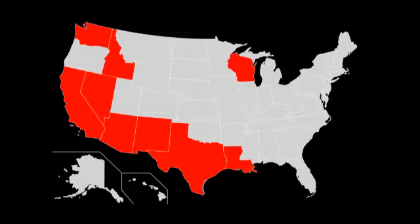Division of community property may take place by item, by splitting all items, or by values. In some jurisdictions such as California, a 50/50 division of community property is strictly mandated by statute, so the focus shifts to whether particular items are to be classified as community or separate property.